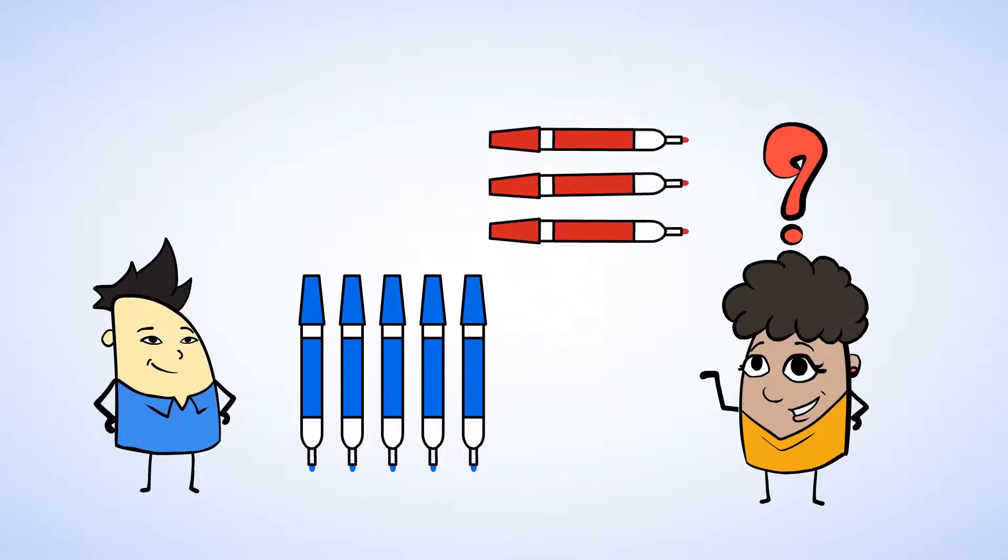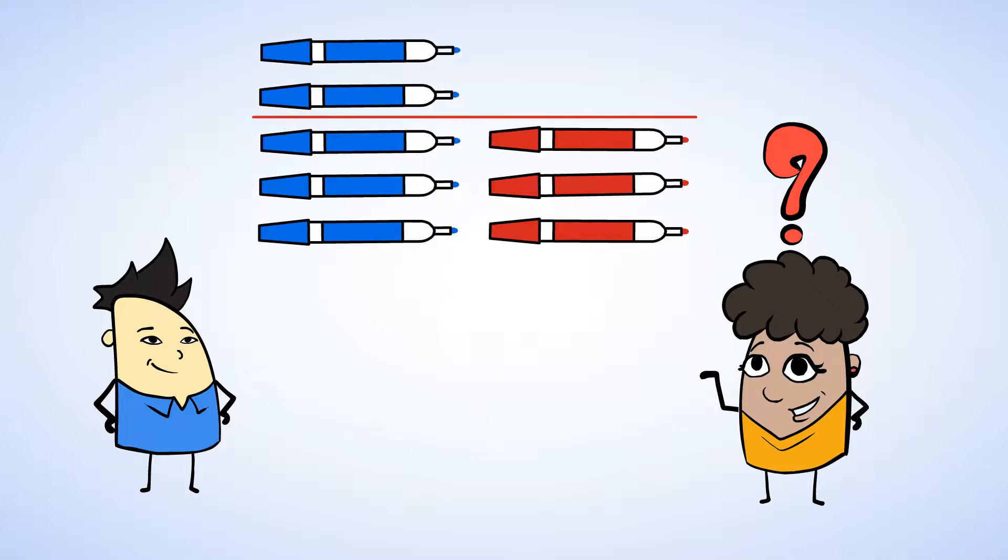Latifah's line of markers stops here, but Chen's keeps going. So Latifah has fewer markers than Chen. And how many markers does Latifah have? One, two, three. She has three markers.